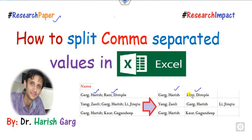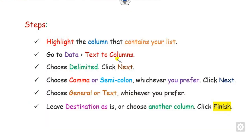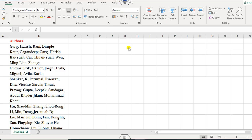In the first row you have two authors placed in two different columns; in the second row there are three authors in three columns, and so on. The task is how you can split comma-separated values in Excel. There are various steps, and I will demonstrate how you can do this.